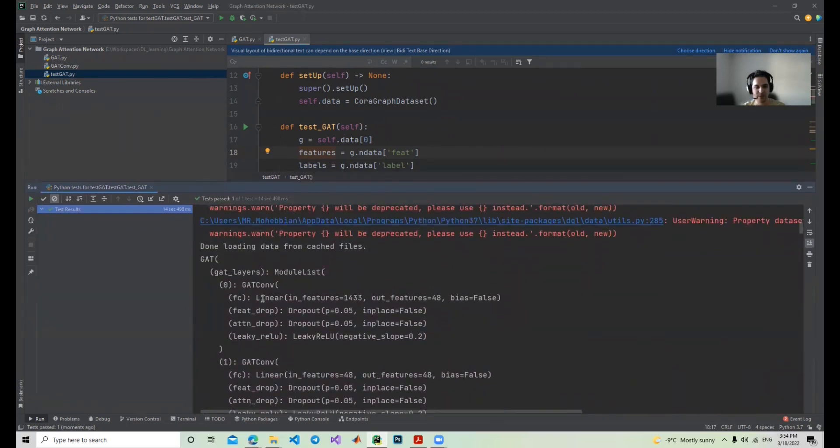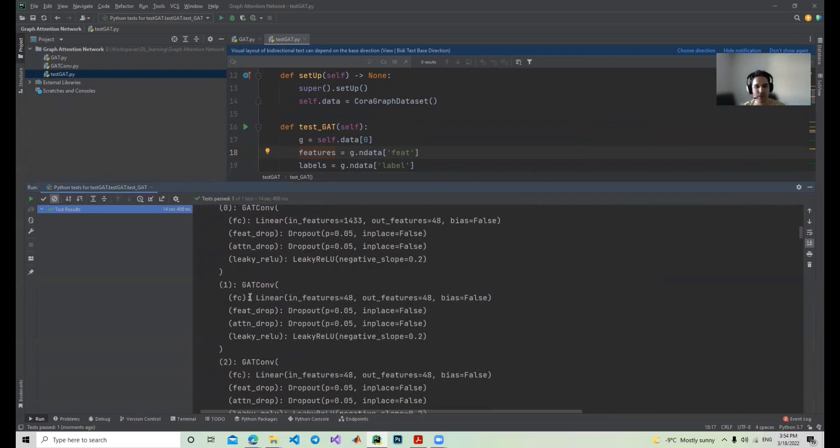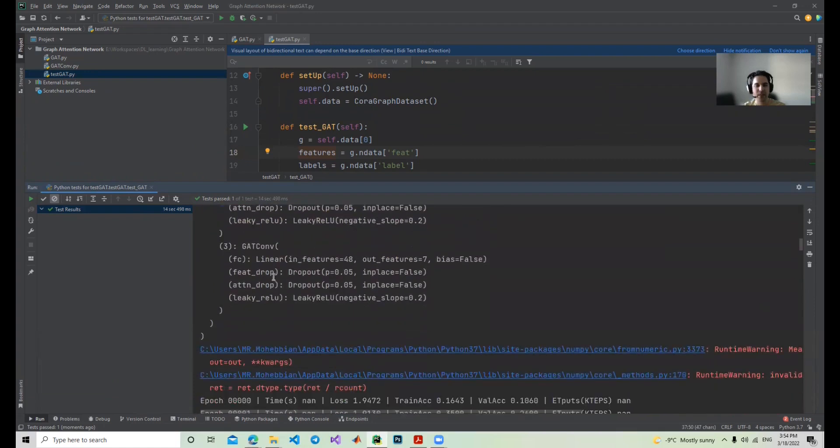We can see the model. We have four different GAT convolutional layers. At first, we have just a linear layer, we have the feature dropout, the attention dropout, and Leaky ReLU, and that is repeated.